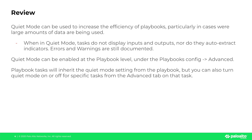You can use Quiet Mode to increase the efficiency of your playbooks. When you use Quiet Mode, tasks won't display inputs or outputs, nor will they auto-extract indicators, and only errors and warnings will be returned to the war room. You can set Quiet Mode at the playbook level under the playbook config and advanced option. Playbook tasks will inherit Quiet Mode from the playbook, but you can still turn it on or off for specific tasks from the advanced tab on that task. Thanks for watching, and we'll see you in the next one.